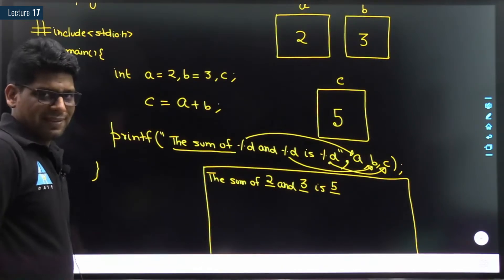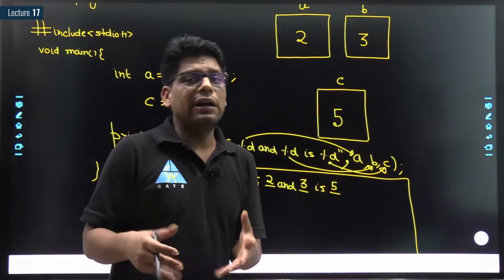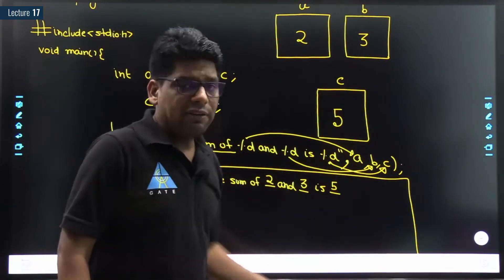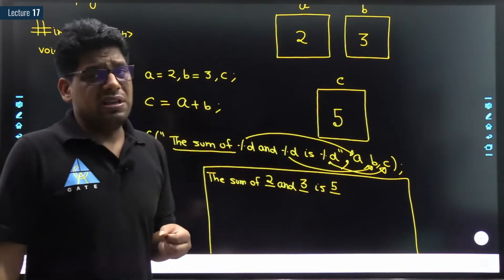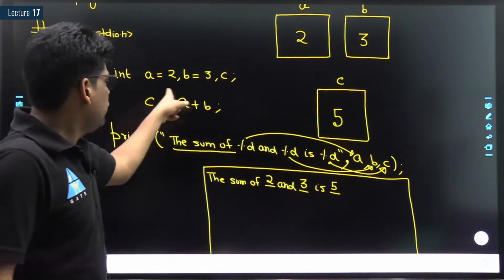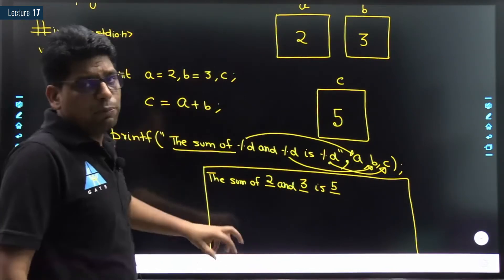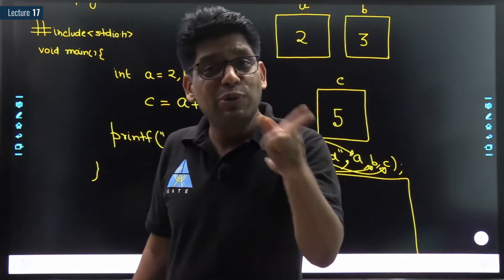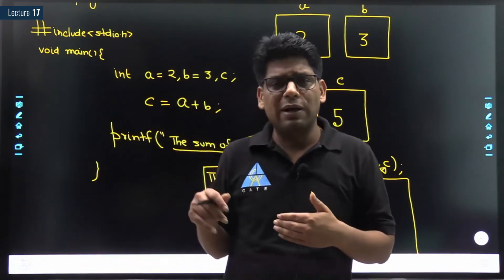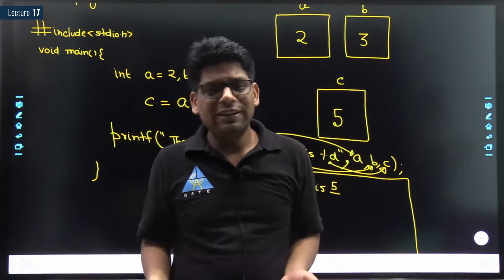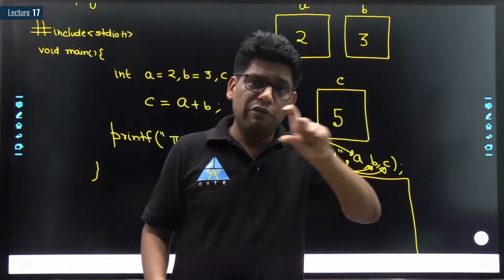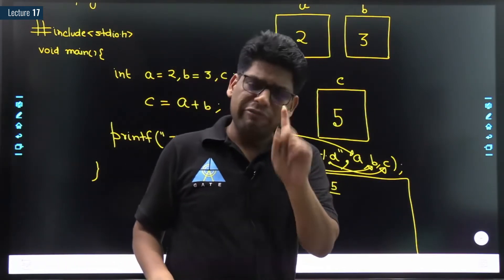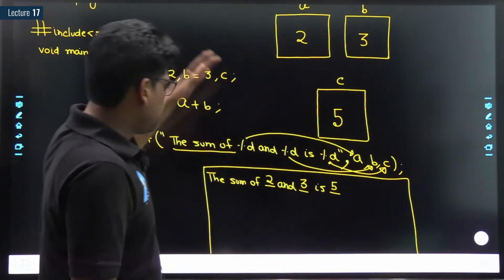But if you run this program a hundred times, the output is always the same: "the sum of 2 and 3 is 5". Why? Because we have hard-coded these two values inside our program. This program is not a general addition program — it only adds 2 and 3. Everyone already knows that sum, so is this really programming? No.